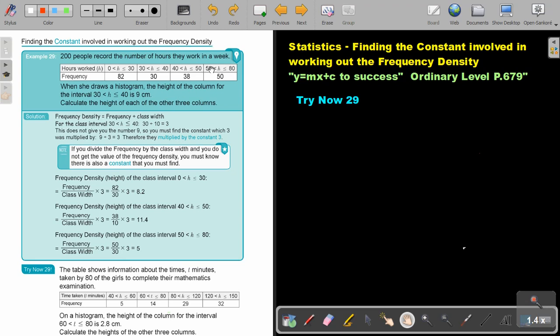Let's look at this example. 200 people record the number of hours they have worked in a week. There is the recording. When she draws a histogram, the height of the column for the interval 30 to 40 is 9. Calculate the height of each of the other three columns.